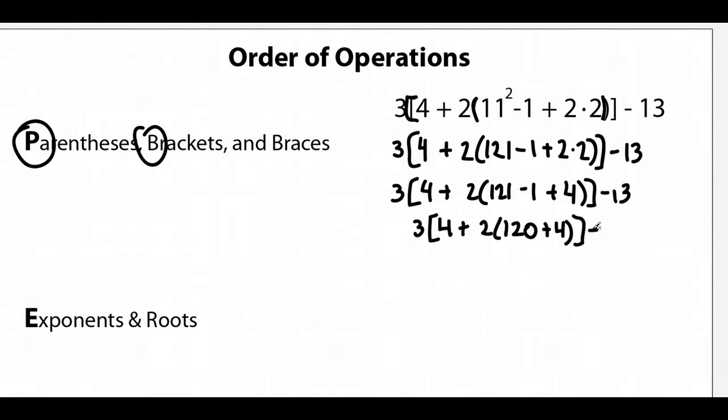And there we go. Now we have to finish off these parentheses, 120 plus 4 is 124. And we drop down the 2. We keep our bracket.